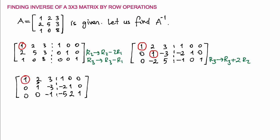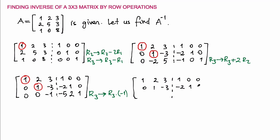Now I have leading ones on the first and second rows. The only problem on the third row is this negative 1 — I want it to be positive 1. So I'm going to multiply the entire third row by negative 1. The result is: Row 1: 1, 2, 3, 1, 0, 0. Row 2: 0, 1, negative 3, negative 2, 1, 0. Row 3: 0, 0, 1, 5, negative 2, negative 1. I now have leading ones on the main diagonal and all zeros below it.